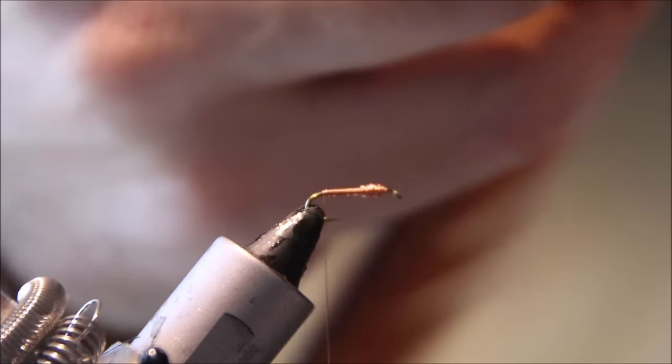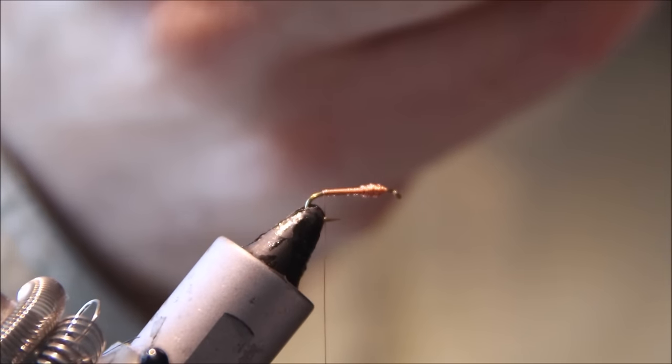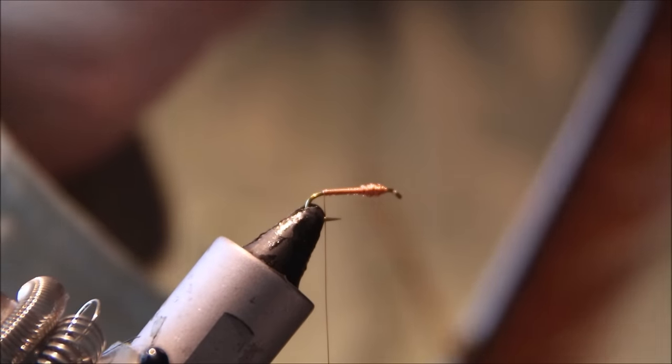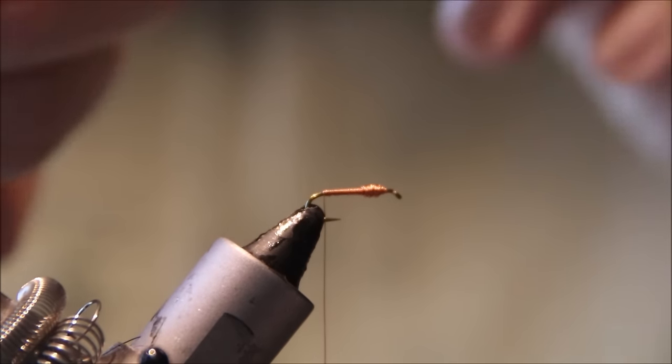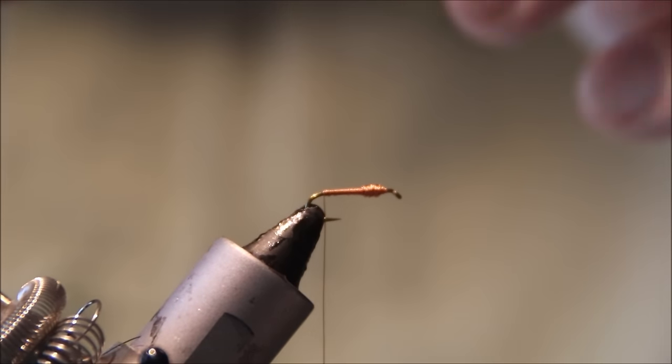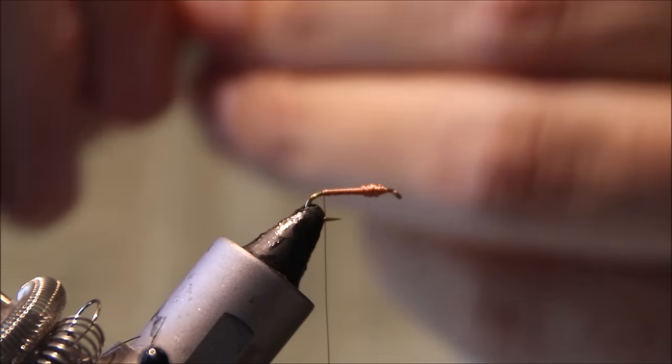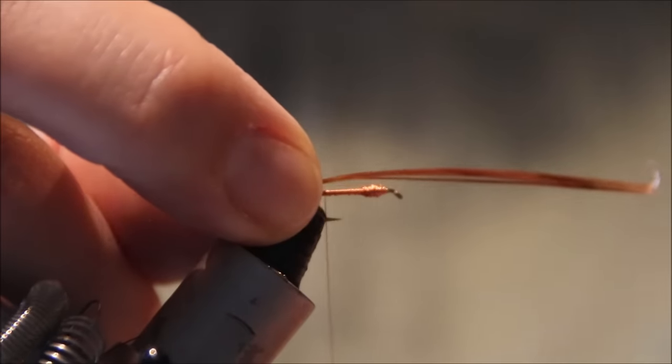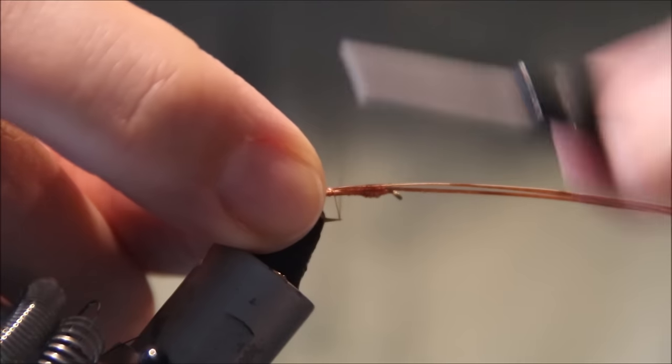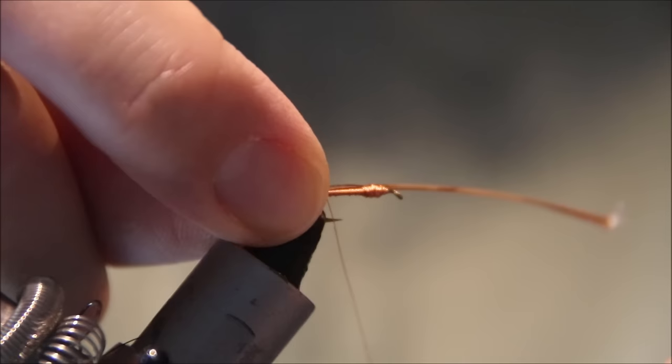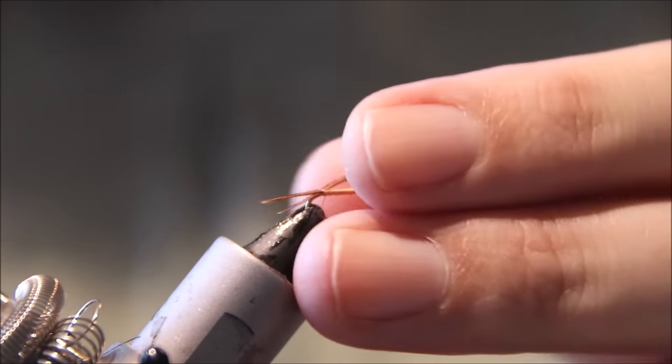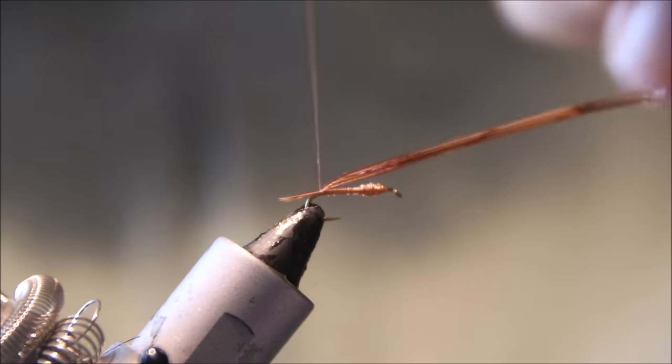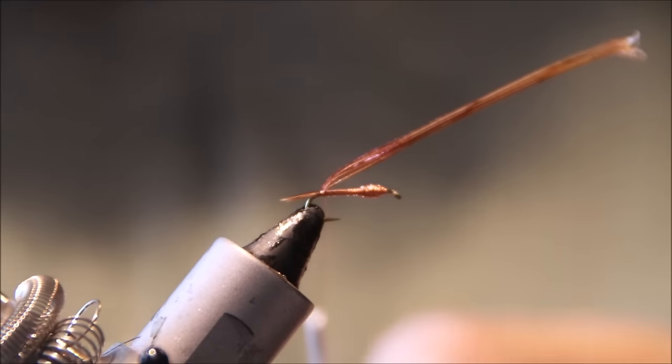For tails, grab four fibers. It gives you a set of one for insurance when tails break. About an eighth of an inch is required, but it's quite hard to hold. So I just take one loose wrap on top and grab all four tails and pull them back until I get the length that I like. I'll take two or three locking wraps.